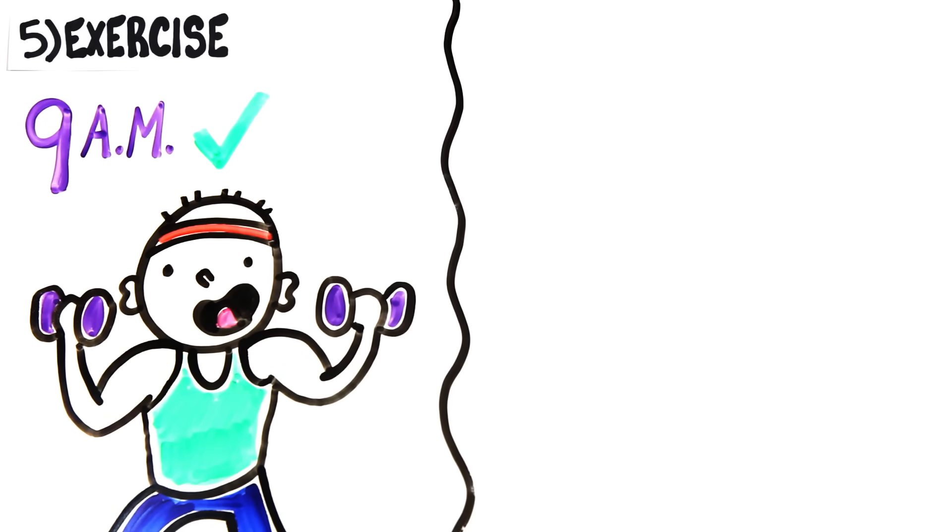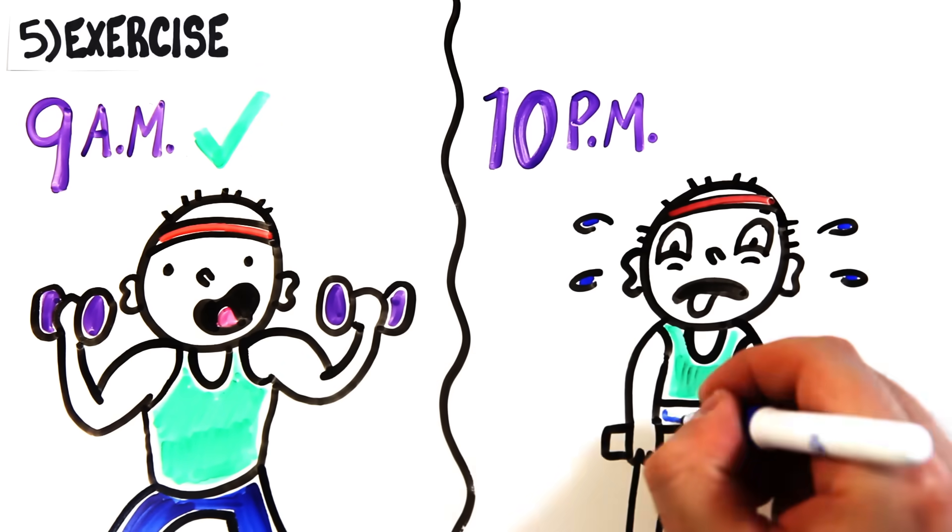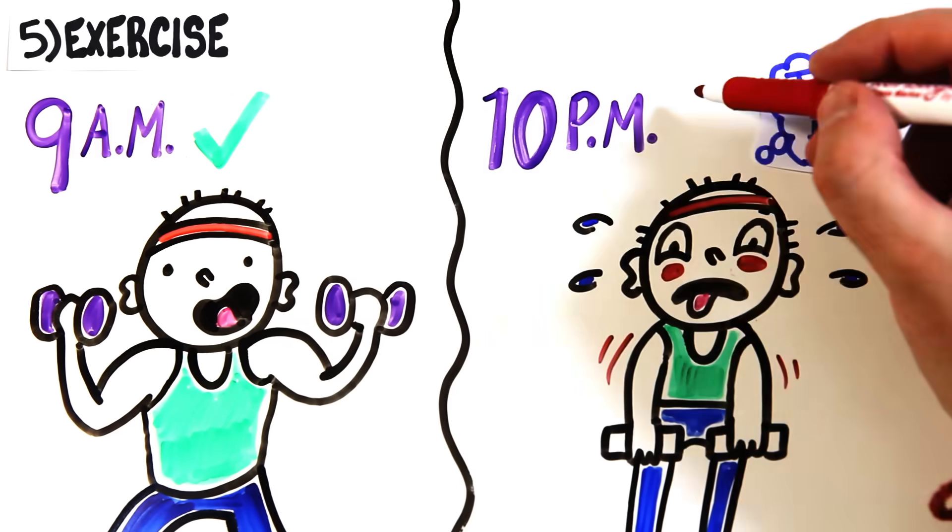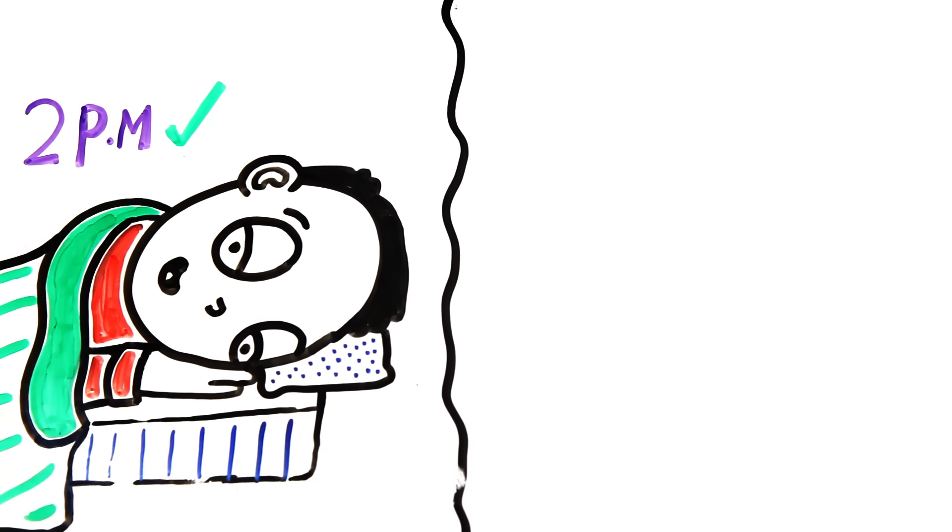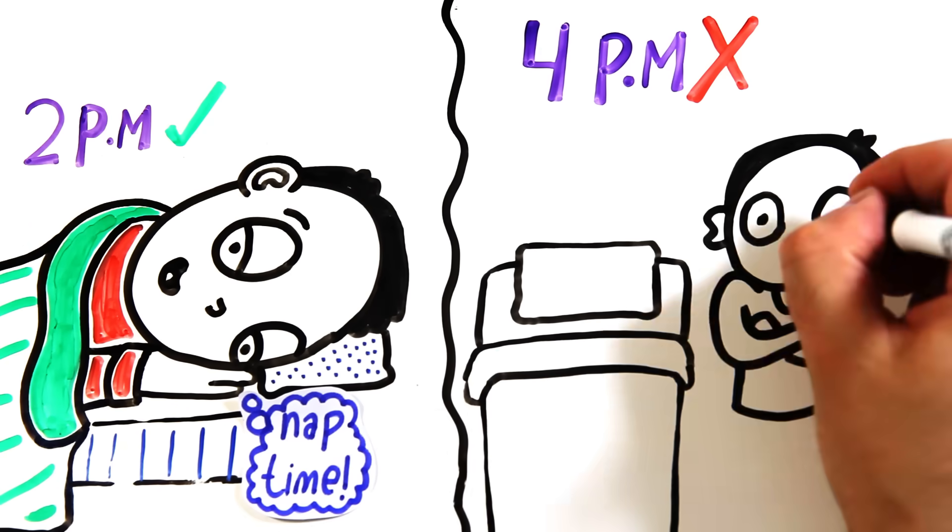Number five, exercising and being physically tired can help you fall asleep faster, but working out two to three hours before bed can keep you up longer. So earlier in the day is better. And same goes with naps, actually. They're great, but don't take them after 3pm or it'll be harder to fall asleep at night.